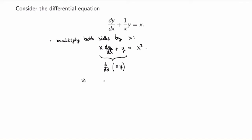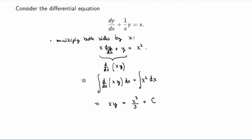So my equation becomes d/dx of x times y equals x squared. This is very nice because I can integrate both sides with respect to x. The integral on the left-hand side is the integral of a derivative, so the antiderivative of a derivative is the function itself, giving me xy. On the right-hand side, integrating x squared gives x cubed over 3 plus the constant of integration. Finally, dividing by x, I get y equals x squared over 3 plus C over x, which is the general solution.